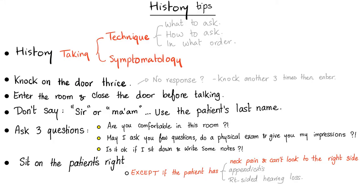They will give you a case. The first thing is to knock on the door — this is very important. Patients' privacy needs to be respected. Knock three times. If the patient is not responding, try again three times. If the patient is still not responding, that's a setup — you need to enter the room. Maybe it's appendicitis and the patient has severe abdominal pain and cannot respond to you, or maybe the patient is depressed.